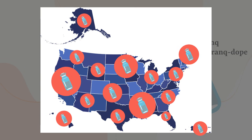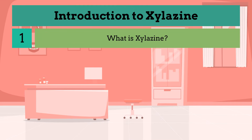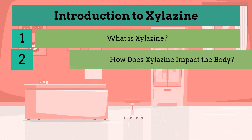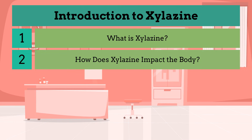Xylozine can be added to drugs that are injected, snorted, smoked, or swallowed. Now that we know what xylozine is, let's explore how it affects the body and why these effects are causing serious concern for public health.